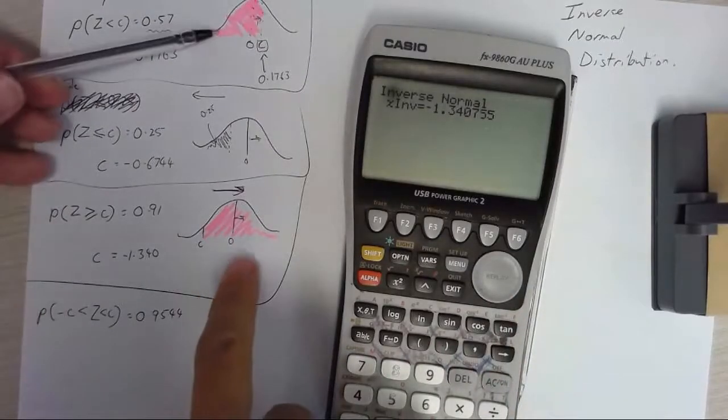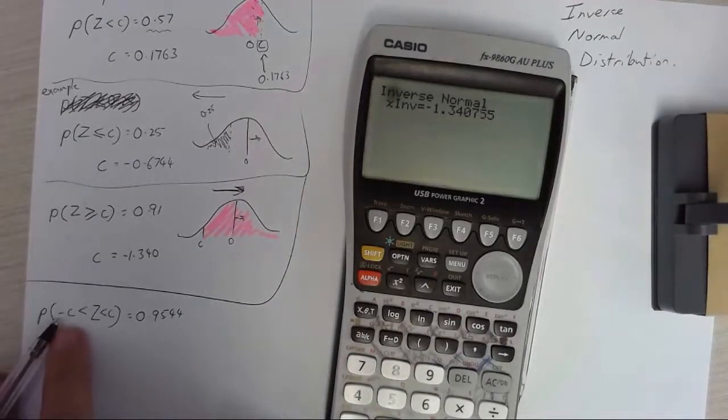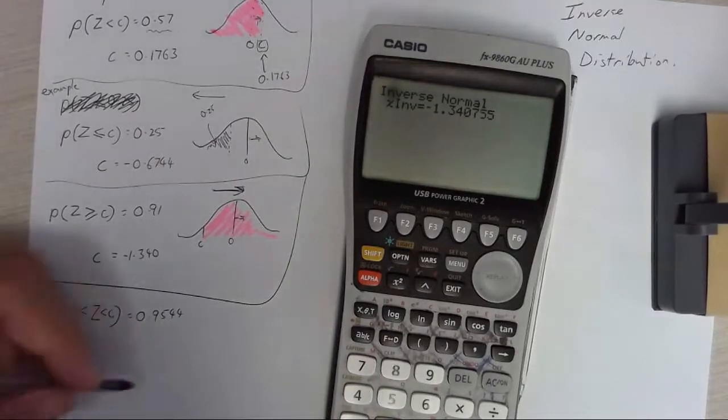You're thinking to yourself okay we've done a left tail, we've done a right tail, what about a center tail? Let's look at this one. The probability that negative c is less than z which is less than c equals 0.9544. Okay let's see.